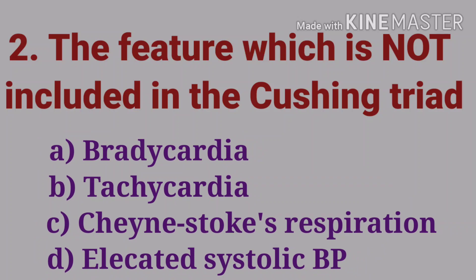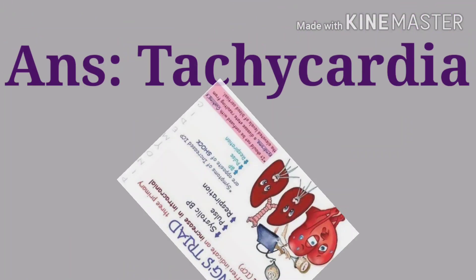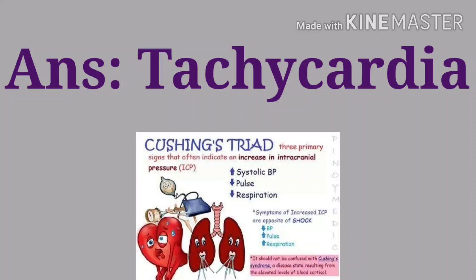The second question: the feature which is not included in the Cushing triad — options are bradycardia, tachycardia, Kussmaul respiration, and elevated systolic BP. The answer is tachycardia. The Cushing triad includes bradycardia, elevated systolic BP, and Kussmaul respiration.